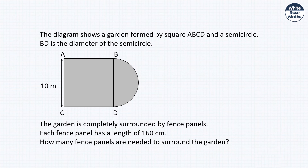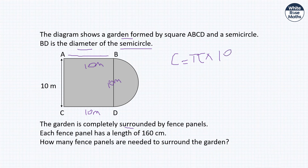A garden is formed by a square ABCD with a semicircle on side BD (diameter 10 m). We need to find how many 160 cm fence panels surround it. The square contributes three sides = 30 m. The semicircle arc = πd ÷ 2 = 5π metres. Total perimeter = 30 + 5π metres.